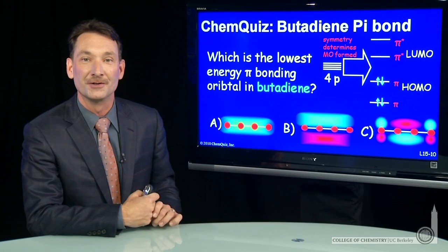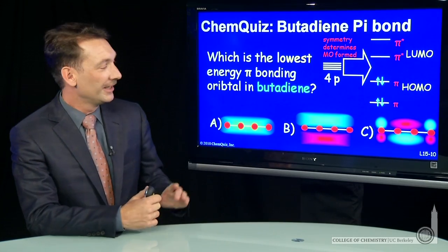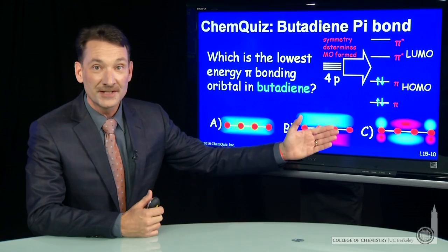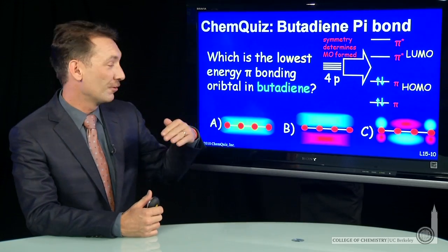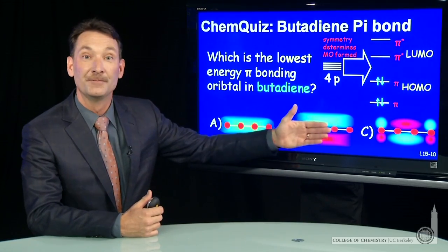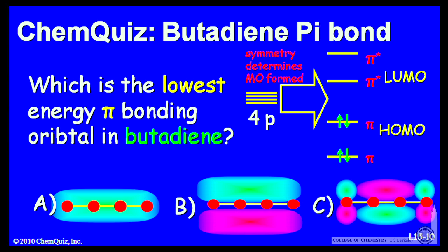Let's look at the pi bonding orbitals in butadiene. Can you determine which is the lowest energy pi bonding orbital, A, B, or C? Think about that for a minute and make a selection.